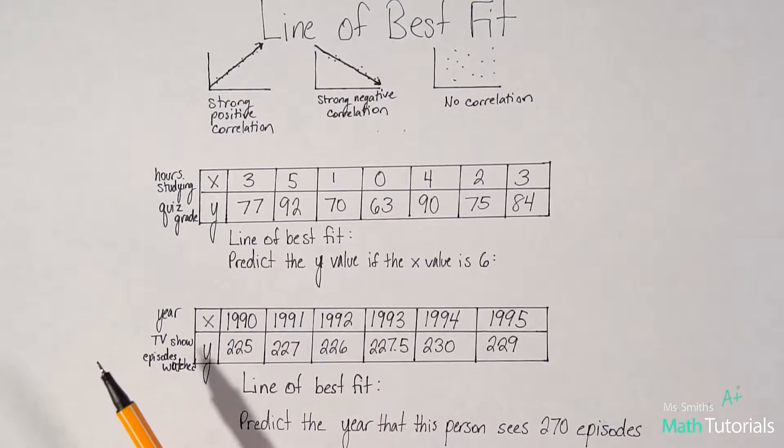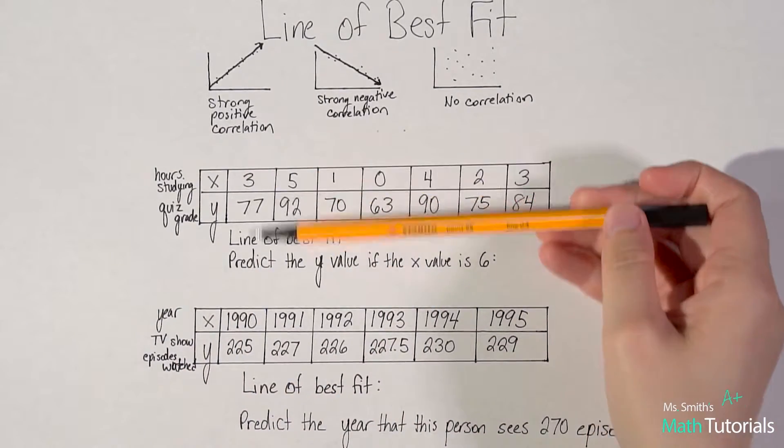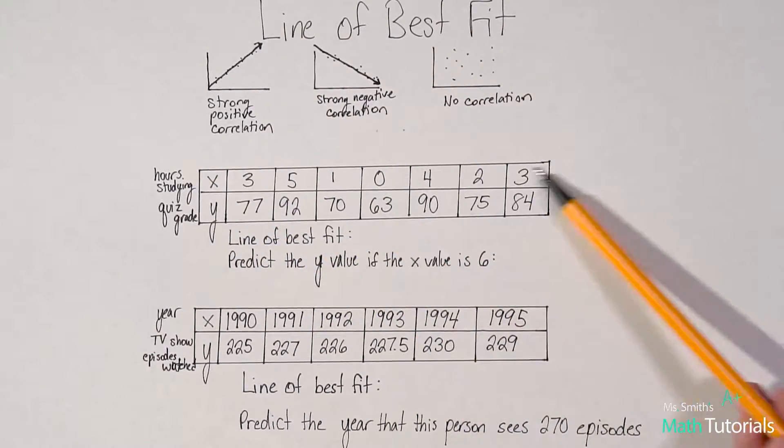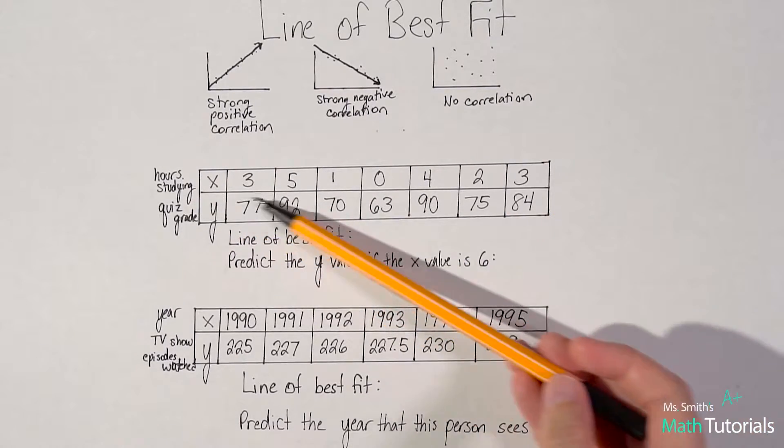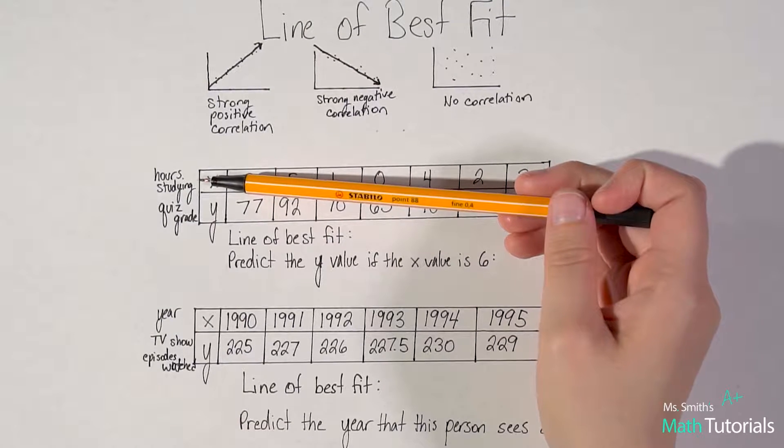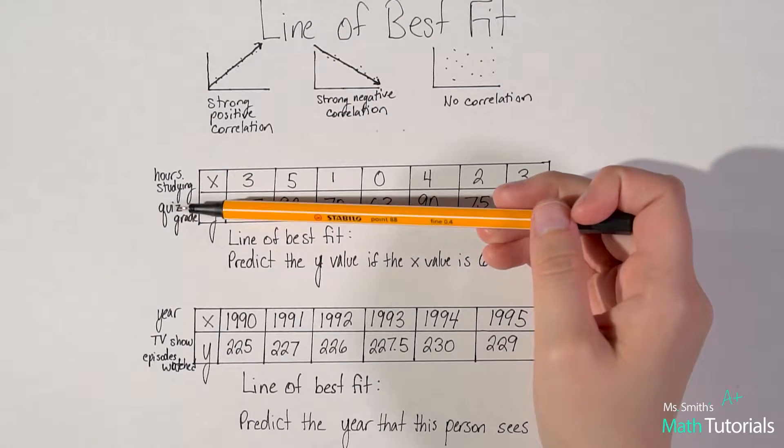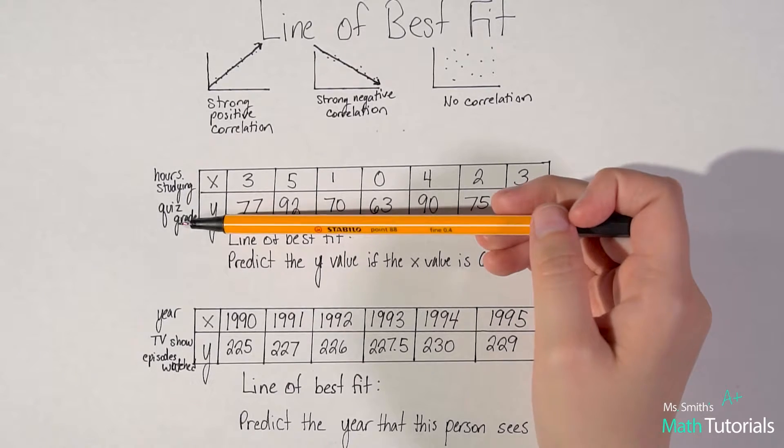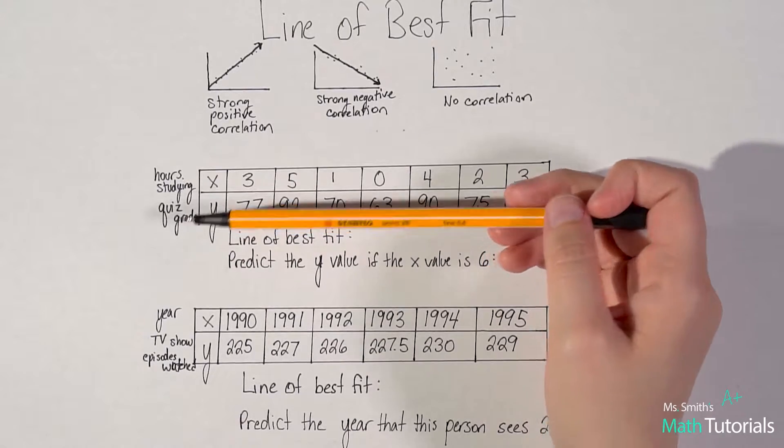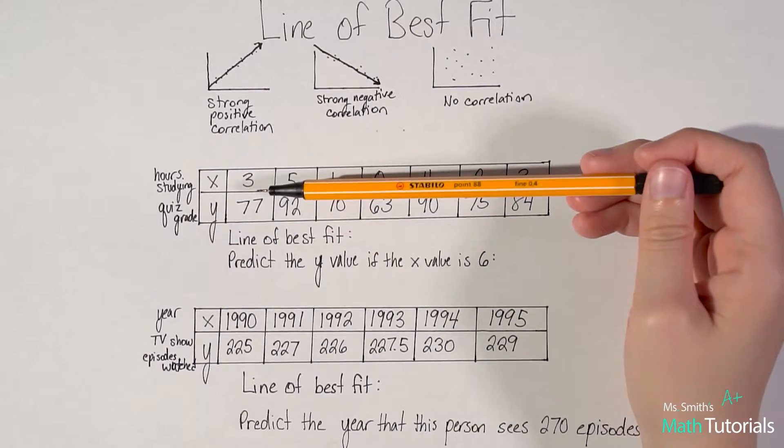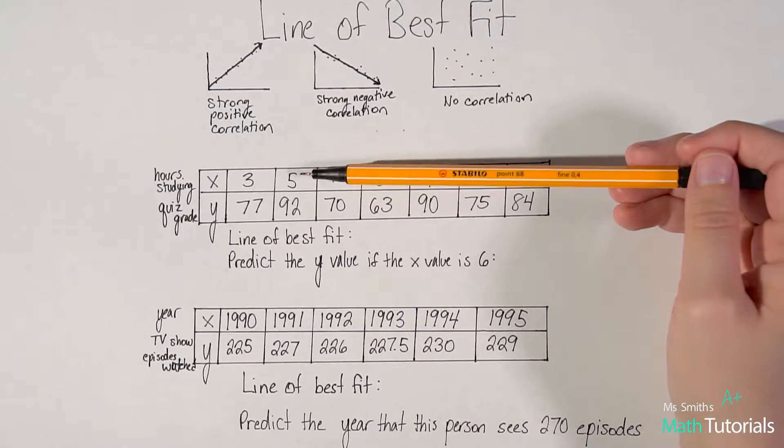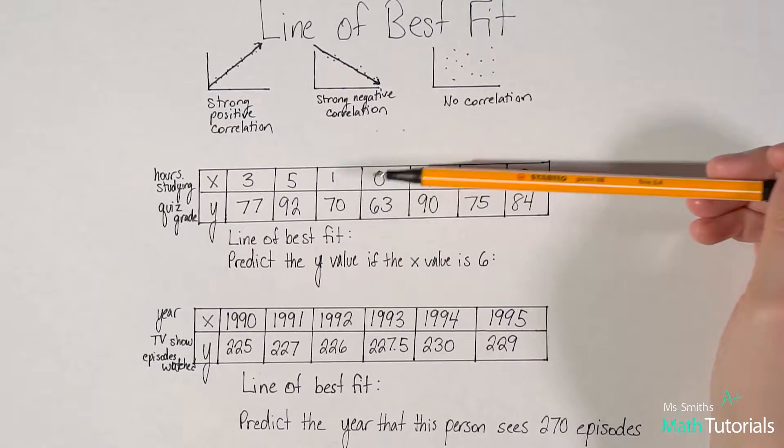Let's say that I've been given this set of data. I've got my x values, and I've got my y values. It says my x values is hours spent studying. My y values is the resulting quiz grade. So hours spent studying versus your quiz grade, and we've got some data points. This student studied for three hours, he ended up with a 77. The student studied for five hours, they ended up with a 92, and so forth.